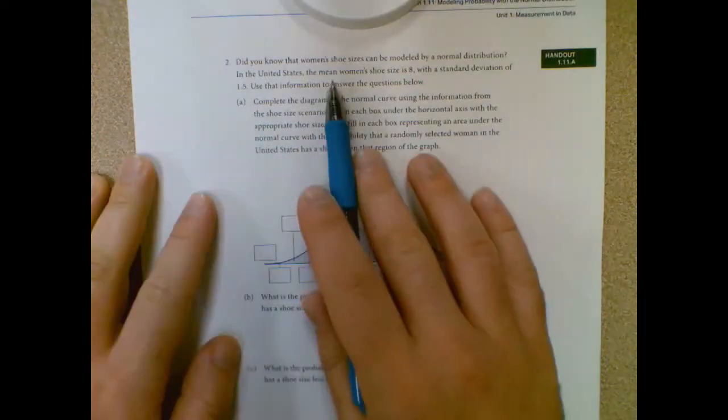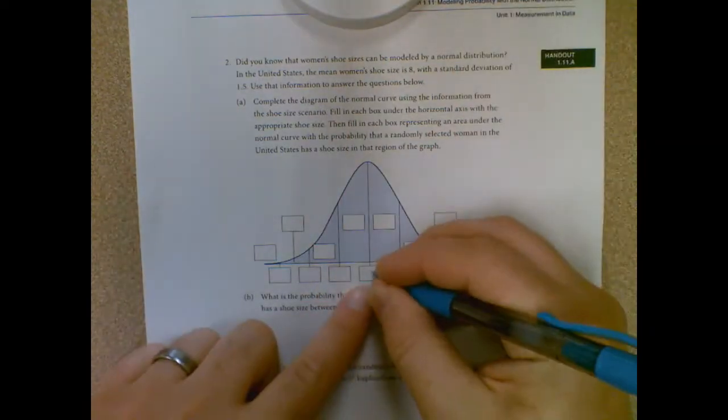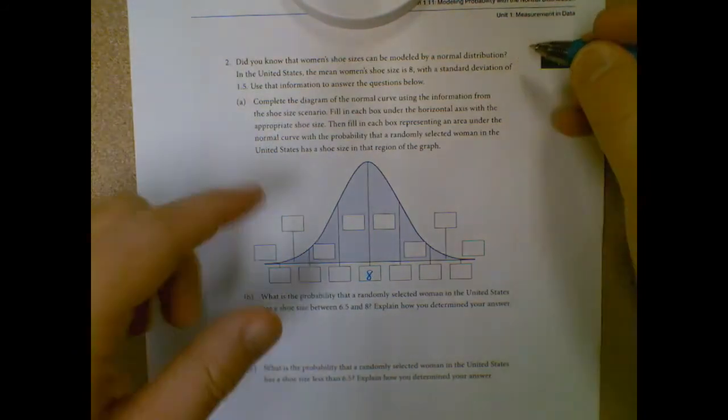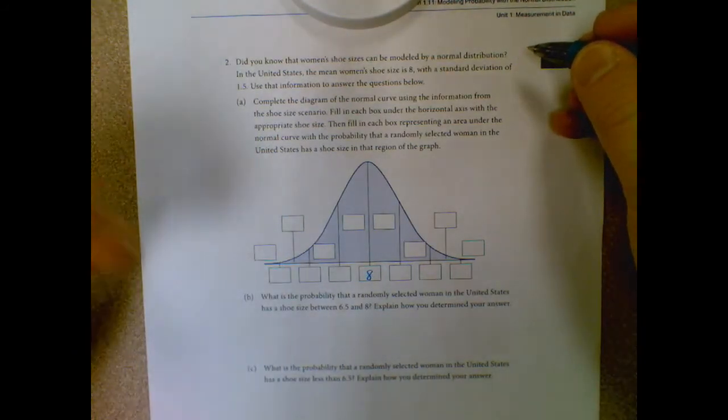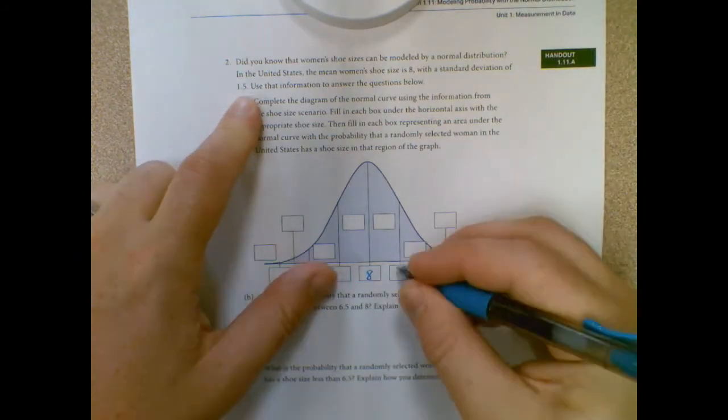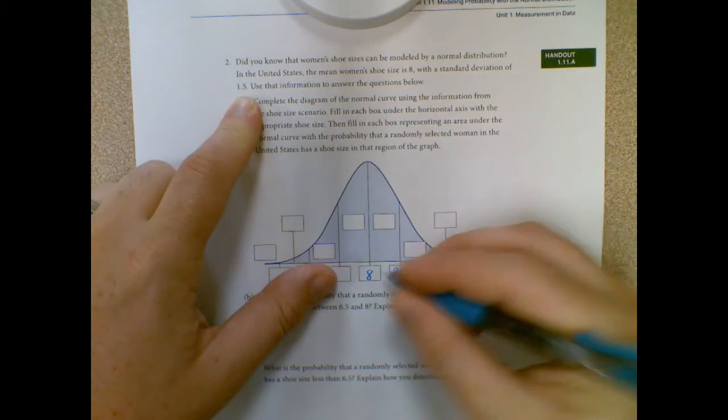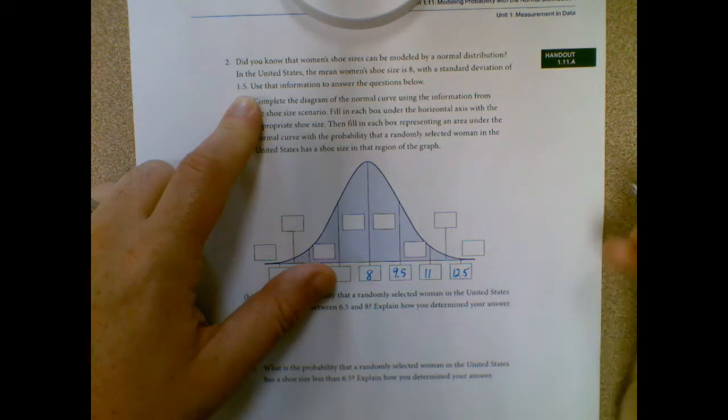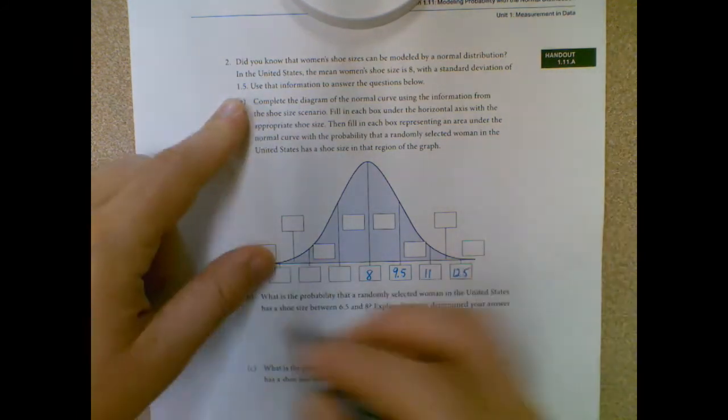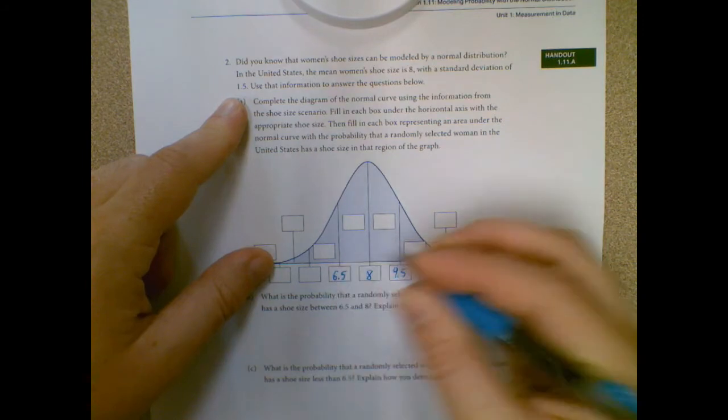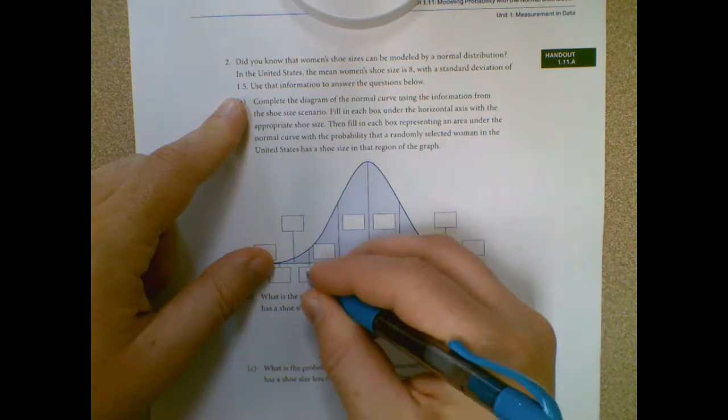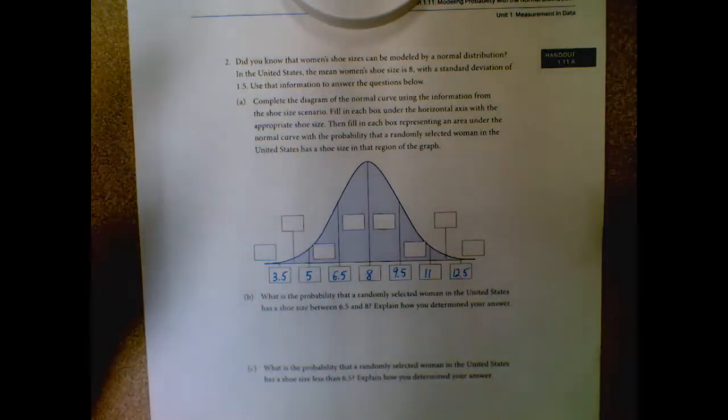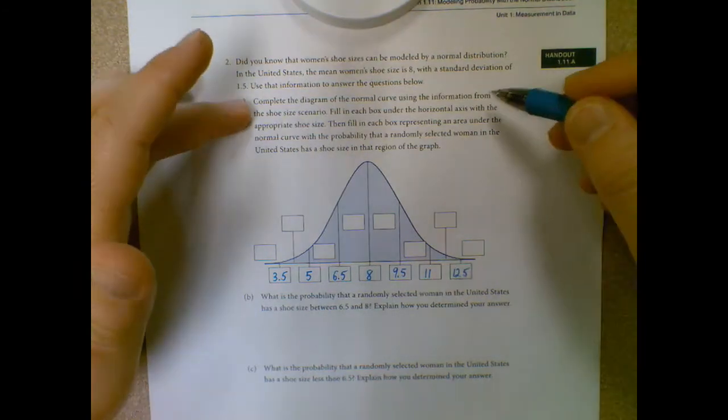So in the United States, the mean women's shoe size is eight. So I can go ahead and put that right in the middle there with a standard deviation of one and a half. So I'm not going to get perfect answers here, but they're not too bad. So I can add one and a half to go this way. And then I want to subtract to go the other way. So six point five, five, and three point five.